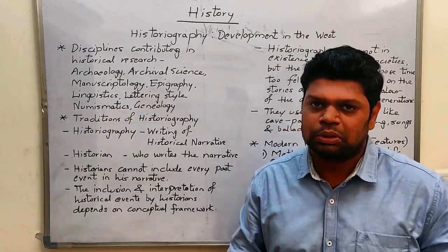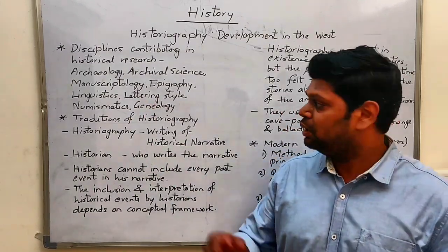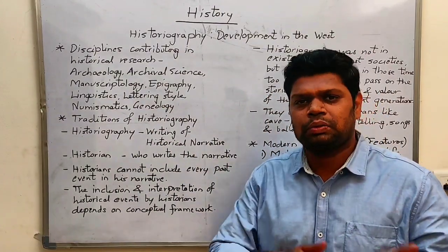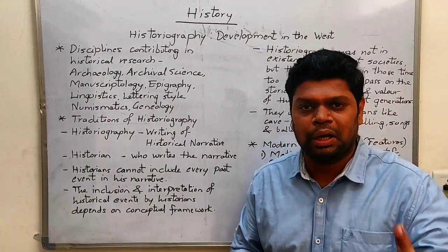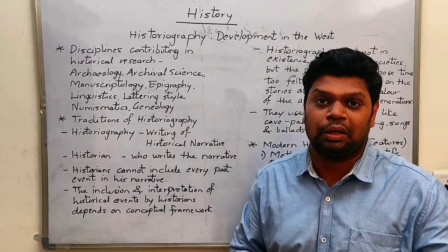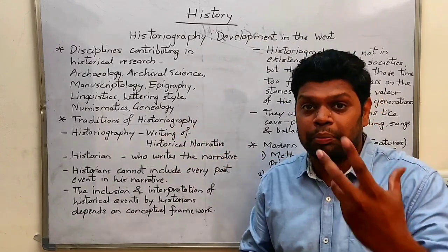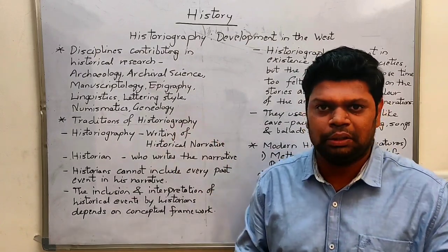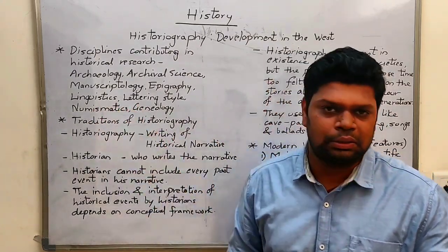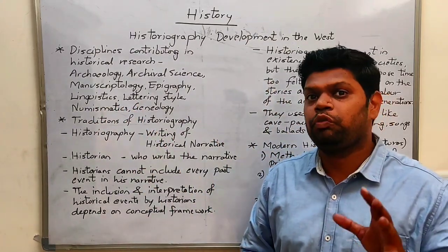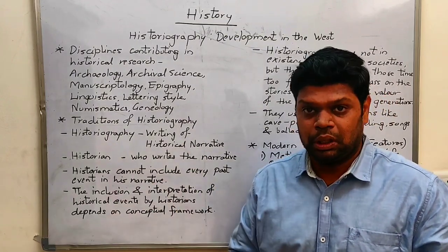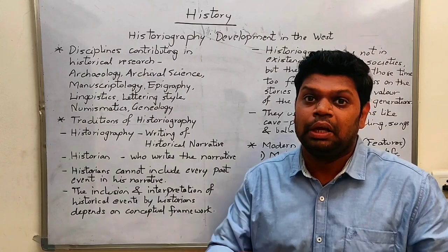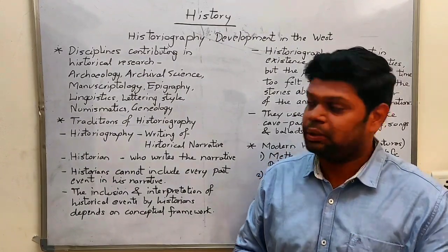Next, linguistics — the study of languages — is very important. Lettering style refers to what style of letters were written, what script was used, what materials like paper were used, and what formulas were applied. Numismatics is the study of coins — what coins were made of, what inscriptions appeared on them, and what materials were used.